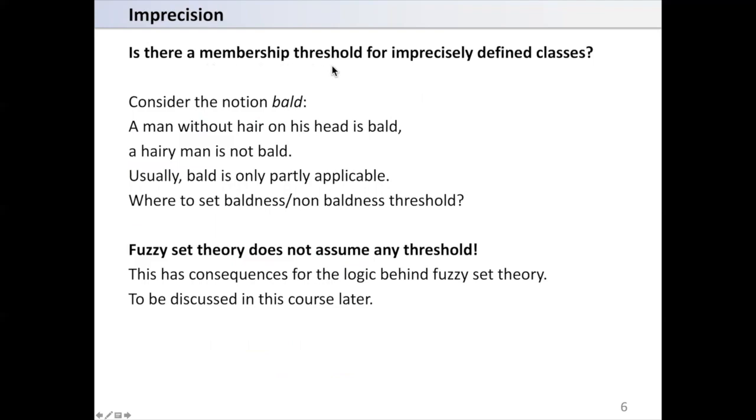Is there a membership threshold for imprecisely defined classes? Consider the notion bald: a man without hair on his head is bald, a hairy man is not bald. Usually bald is only partly applicable. Where to set baldness-non-baldness threshold?